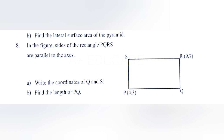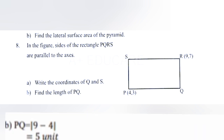Question 8: In the figure, sides of rectangle PQRS are parallel to the axis. Part a: Write the coordinates of Q and S. Answer: Q is (9, 3) and S is (4, 7). Part b: Find the length of PQ. Answer: PQ equals 9 minus 4 equals 5 units.